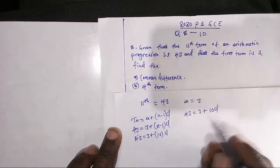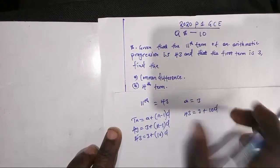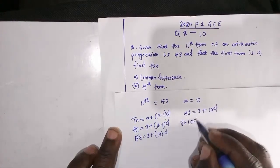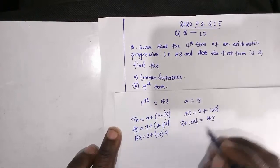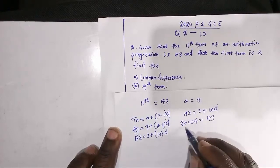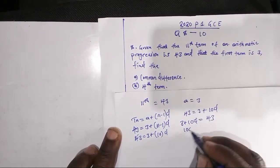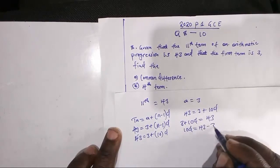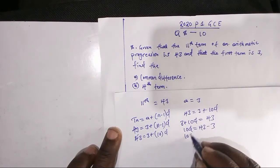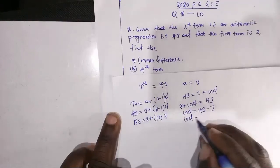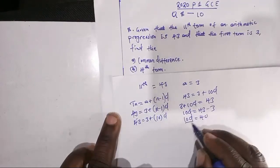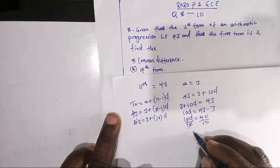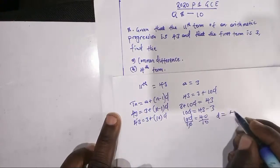So we are going to take all terms to the left side, giving us 3 plus 10D equals 43. Then when you subtract 3 from both sides, you get 10D equals 43 minus 3, which is 40. Then you divide both sides by 10, and the common difference D equals 4.